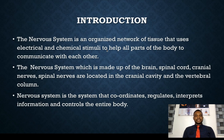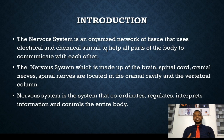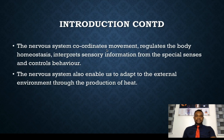Without the nervous system, other systems cannot function effectively. So understanding the anatomy of the nervous system is key to knowing how the structures function. Now the nervous system consists of the brain, the spinal cord, the cranial nerves, as well as the spinal nerves. As we continue in the tutorial, I will explain what all this is about.